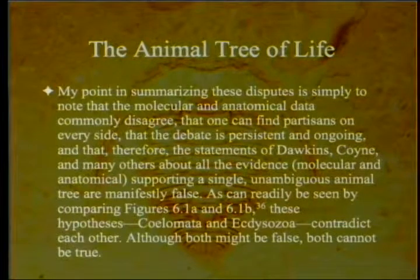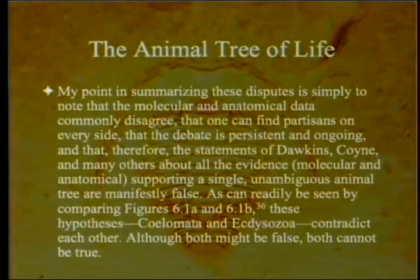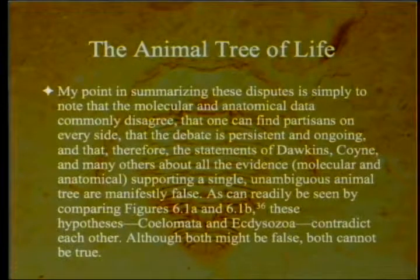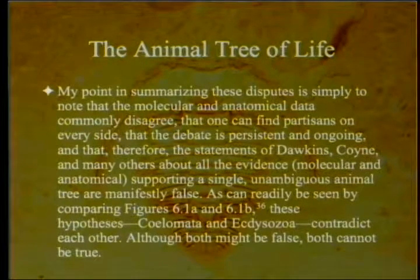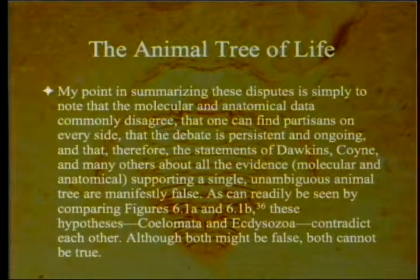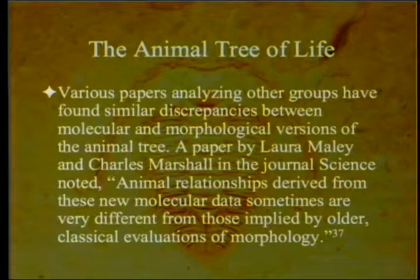My point in summarizing these disputes is simply to note that molecular and anatomical data commonly disagree, that one can find partisans on every side, and that the debate is persistent and ongoing. Therefore, the statements of Dawkins, Coyne, Atkins, and many others about all this evidence supporting a single unambiguous animal tree are manifestly false. As can be readily seen by comparing figures 6-1a and 6-1b, the coelomata and ecdysozoa hypotheses contradict each other — although both might be false, both cannot be true.